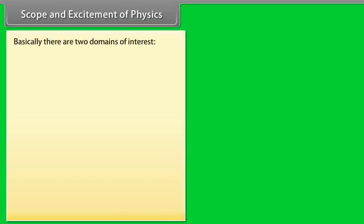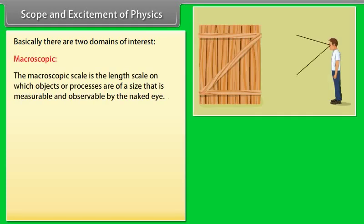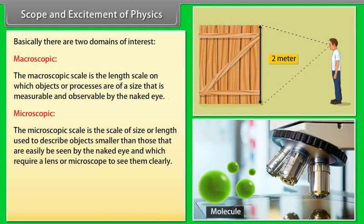Basically, there are two domains of interest. Macroscopic: the macroscopic scale is the length scale on which objects or processes are of a size that is measurable and observable by the naked eye. Microscopic: the microscopic scale is the scale of size or length used to describe objects smaller than those that can easily be seen by the naked eye and which require a lens or microscope to see them clearly.